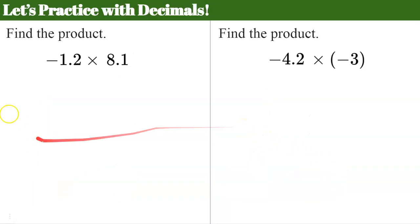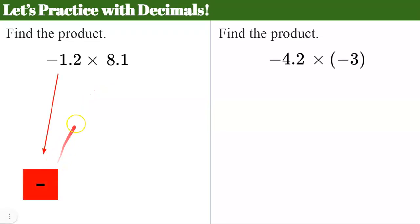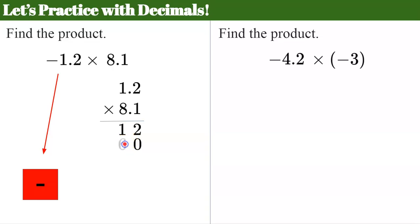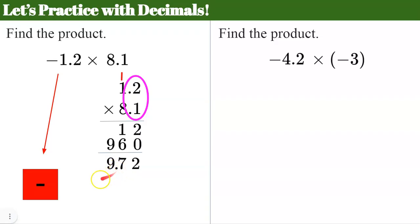Let's practice with decimals. Find the product of negative 1.2 multiplied by 8.1. Different signs — make my plan — negative product. Line up the digits and multiply: two times one is two, one times one is one, bring down a zero; eight times two is 16, write the six and carry one; eight times one is eight plus one is nine. Now add: two plus zero is two, one plus six is seven, bring down nine. Count decimal places in the factors: one plus one equals two decimal places. Place the decimal to get 9.72. The answer is negative 9.72.